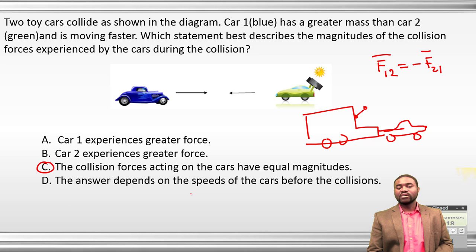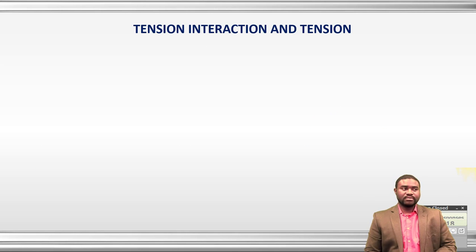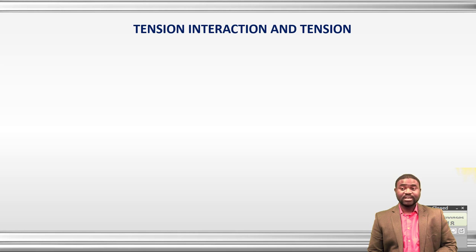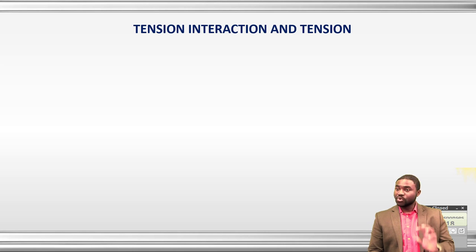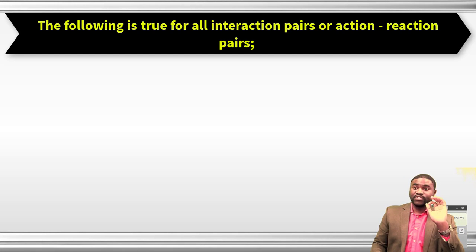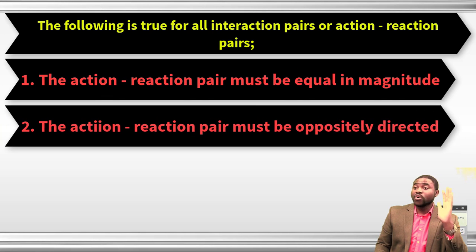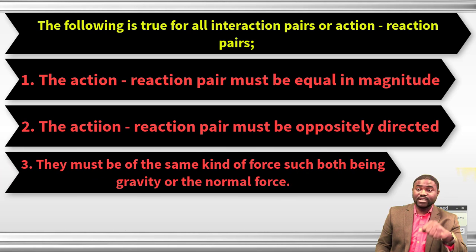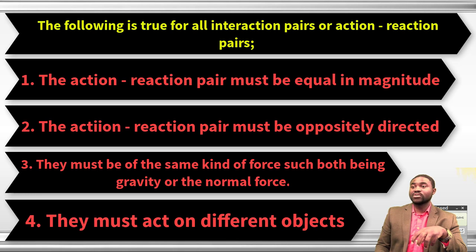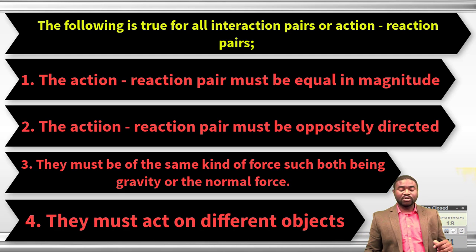Newton's third law is very easy to state, but among all three laws it is the most difficult to interpret. For any interaction pair or action-reaction pair, they must fulfill three characteristics: one, the forces must be equal in magnitude; two, they must be oppositely directed; three, they must be of the same kind. And four, they should act on separate bodies.